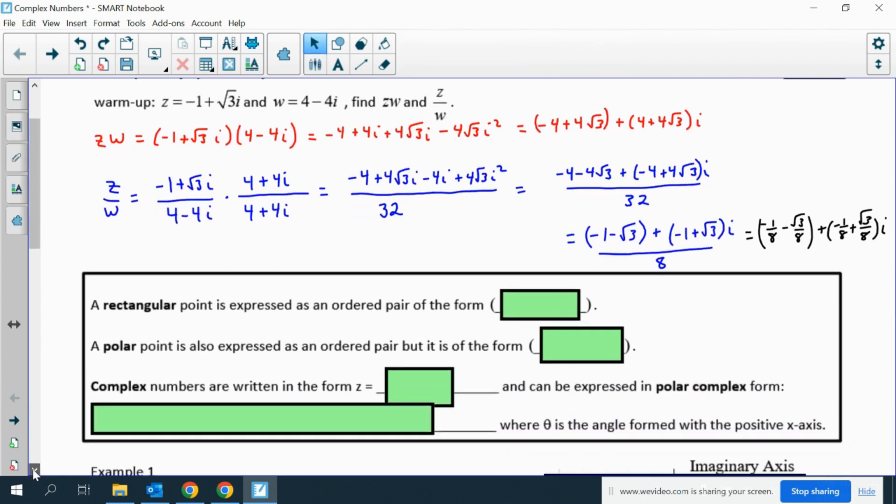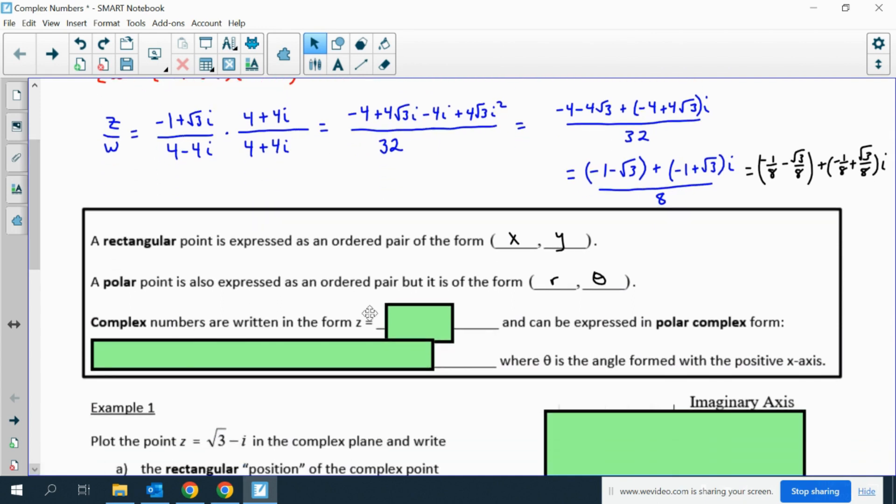Now a couple quick reminders. A rectangular point is (x, y), and a polar point is (r, theta). Complex numbers are just another way of writing points on a plane. We can write complex numbers in the form x plus yi. So essentially you just take this point and rewrite it in complex form.